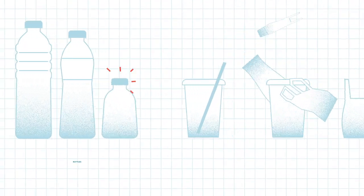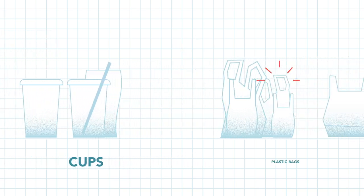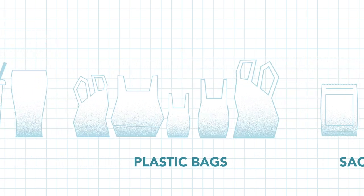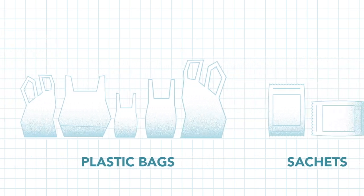Once you have collected your plastic waste, you can begin sorting and recording the data. Divide all the collected items into piles by item, and then divide each of those piles into groups by brand.